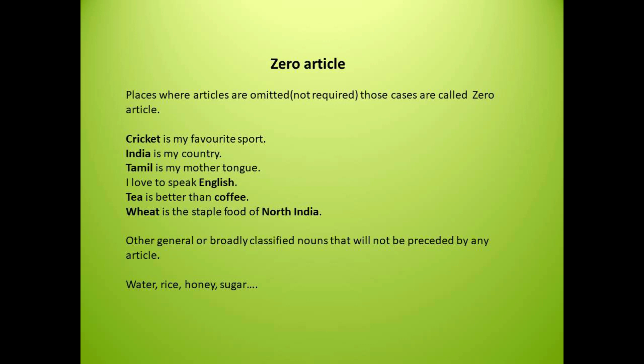The next example is: tea is better than coffee. It's wrong if I say 'the tea is better than the coffee.' The reason is tea and coffee are generalized and broadly classified nouns. Generalized or broadly classified nouns — for example, water, rice, sugar — when these come, articles are omitted.